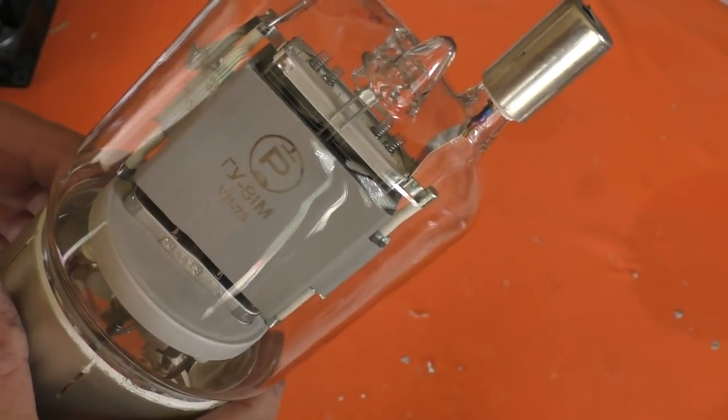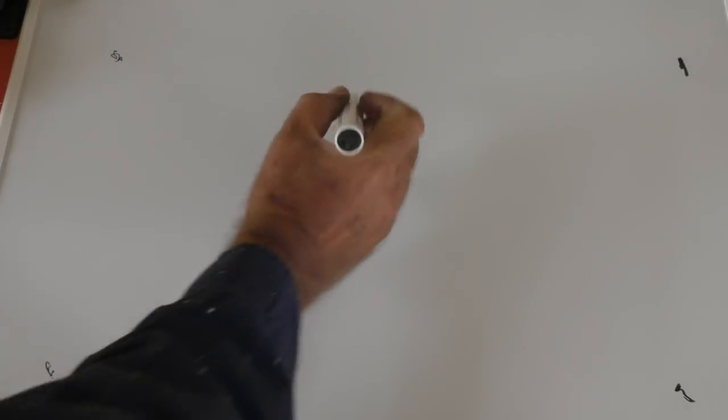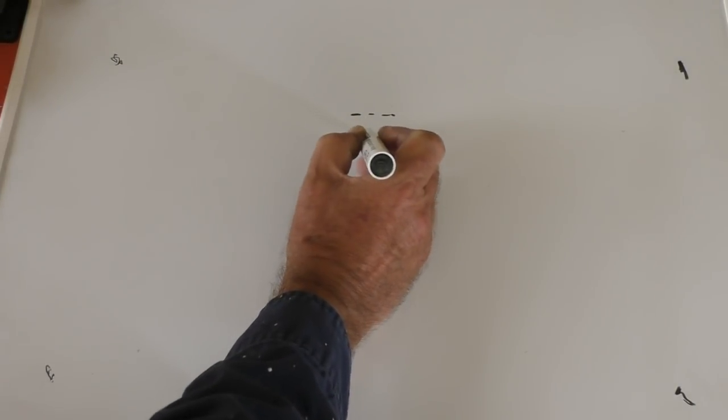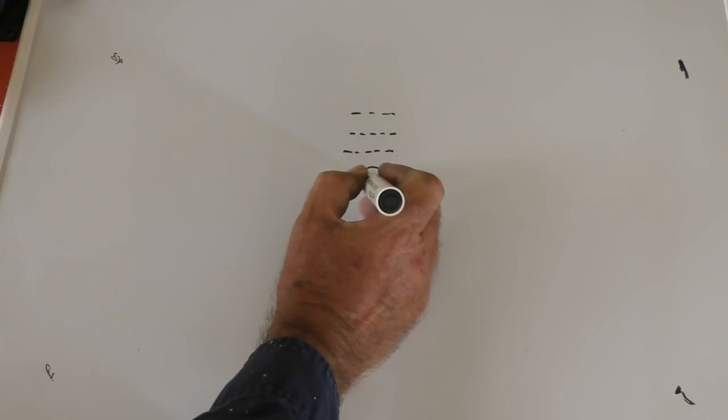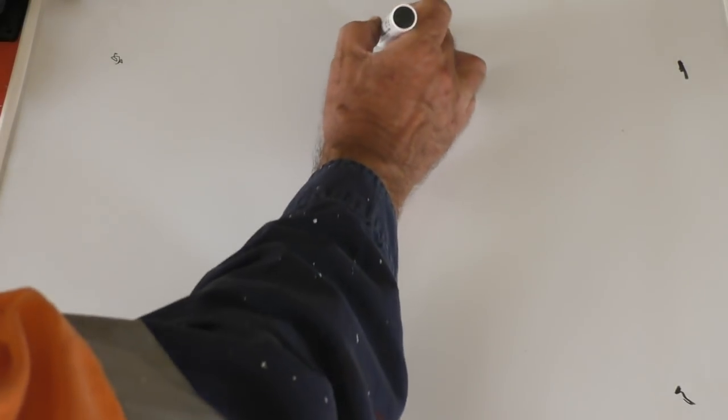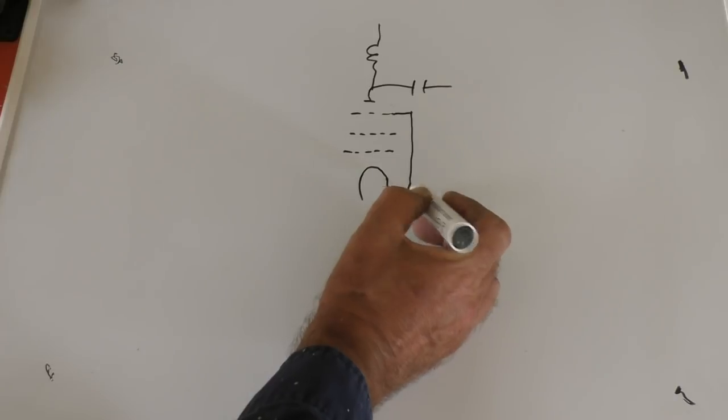Now you can amplitude modulate these quite easily as you can with any tetrodes or pentodes. So if that's the GU81M, that's the cathode down there and the anode RF choke capacitor. There's a suppressor grid, probably could connect the suppressor grid to the cathode.